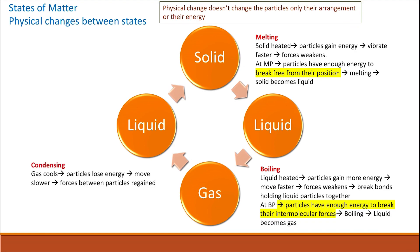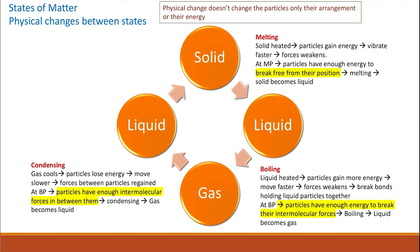Gases can change into liquid through condensation. Gases are cooled and particles lose energy, so they start to move slower and the forces between the particles are regained. The condensing point is the same as the boiling point. The particles will have enough intermolecular forces between them to condense, and the gas changes its state from gas into liquid.